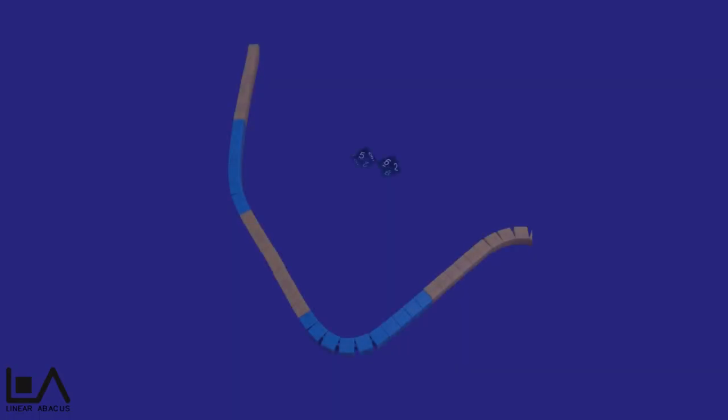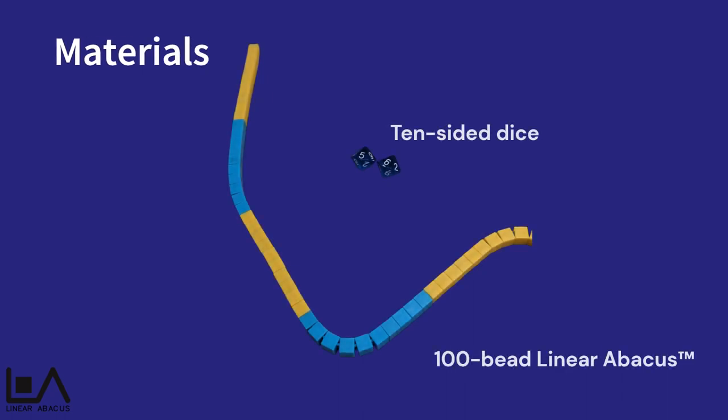Hi everyone and welcome to Linear Abacus. My name is Genevieve Gruis and today I'll be going through a place value game known as How Many Ways. For this activity you will need two 10 sided dice and one 100 bead linear abacus.